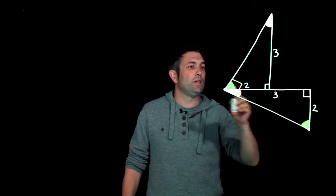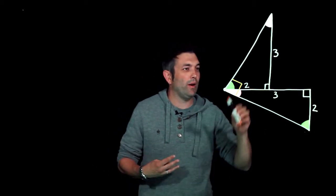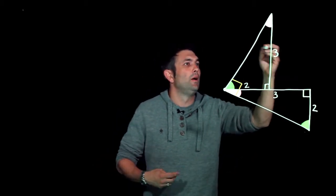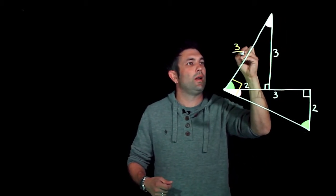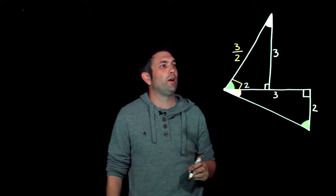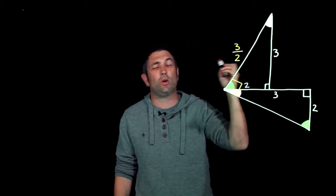Now what we can then say is we can find the gradient of these using the rise over the run. Now if I look at this one here, the rise over the run, well it's gone up three when it's gone along two. The rise over the run gives me a gradient of three over two. I'm going to leave it as 3/2, I know it's one and a half, I'm going to leave it as 3/2 and you'll see why in a second.